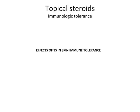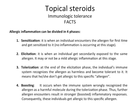Effects of topical steroids in skin immunotolerance. Allergic inflammation can be divided into four phases: sensitization, elicitation, tolerization, and boosting. Sensitization is when an individual encounters the allergen for the first time and gets sensitized to it — at this stage, there is no inflammation. Elicitation is when an individual gets secondarily exposed to the same allergen, and there may be a mild allergic inflammation. Tolerization occurs when the immune system recognizes the allergen as harmless and becomes tolerant to it. Boosting occurs when the immune system wrongly recognizes the allergen as harmful during the tolerization phase, so further allergen encounters result in stronger boosted inflammatory responses and the individual becomes allergic to that allergen.